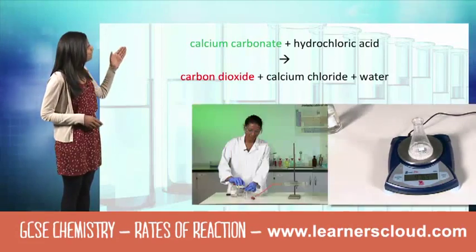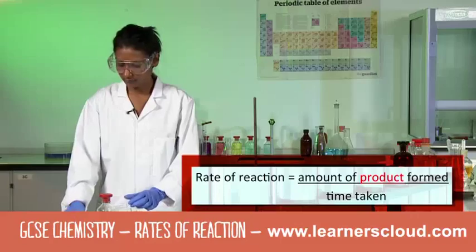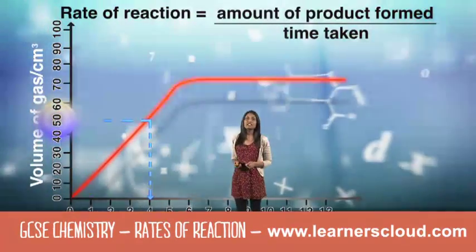...is by taking the amount of product formed. In this case, carbon dioxide: 50 centimeters cubed of carbon dioxide is produced in four seconds.